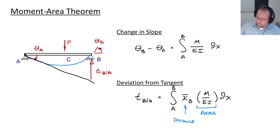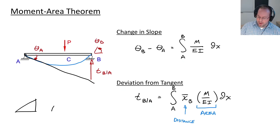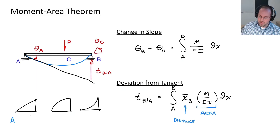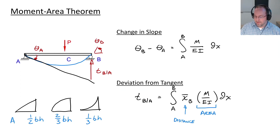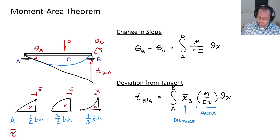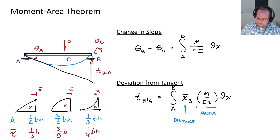That sets us up to calculate areas and centroids for a variety of shapes. The most common shapes are triangles and parabolas, where the parabola can either open up or open down. The area of a triangle is one-half base times height; for the first parabola it is two-thirds base times height; and for the upward-opening parabola it is one-third base times height. The centroid distance X-bar for a triangle is one-third of the base, for the first parabola it is three-eighths of the base, and for the final parabola it is one-quarter of the base.